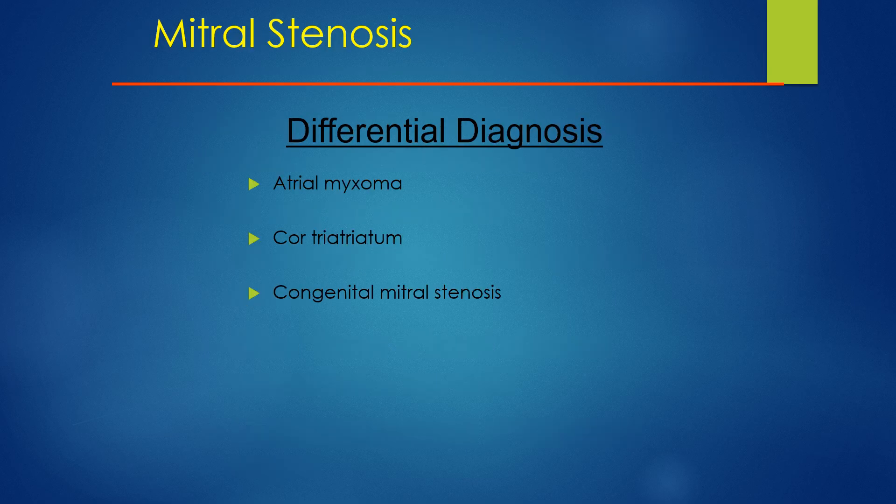The differential diagnosis includes atrial myxoma, cor triatriatum, and congenital mitral stenosis.